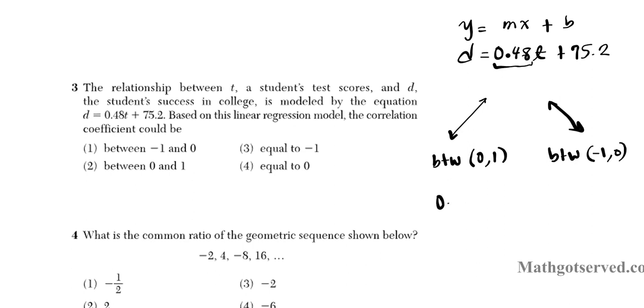But in this case, 0.48 is positive, right? So since it's positive, this indicates a positive correlation. So if you have a positive correlation, then the correlation coefficient is going to be between 0 and 1. Hence, our answer is going to be option number 2.